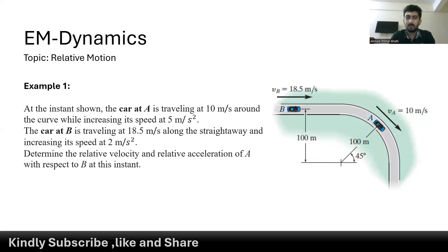We are going to solve this problem. We have a car at point A traveling at 10 meters per second, increasing its speed at 5 meters per second squared. We have another car at point B traveling at 18.5 meters per second along the straightaway, increasing its velocity at 2 meters per second squared. We have to find the relative velocity and relative acceleration of A with respect to B.